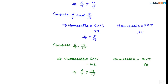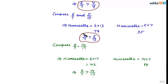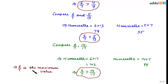We were given four fractions and we have seen that 6/7 is greater than the first one, greater than the second one, and greater than the third one as well. This implies that 6/7 is the maximum value among all the fractions.